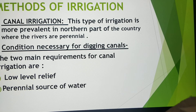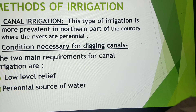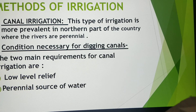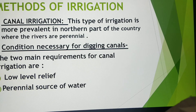Next we have methods of irrigation. They are basically divided into two broad categories: primitive methods of irrigation and modern methods of irrigation. First we are going to talk about the primitive methods of irrigation, which covers canal irrigation, tank irrigation, and wells.